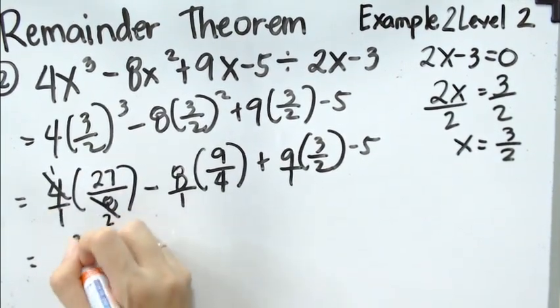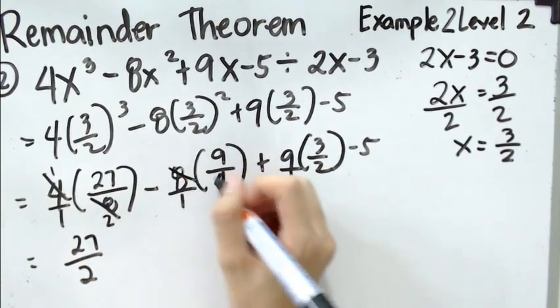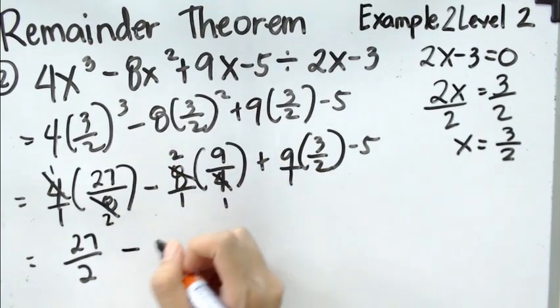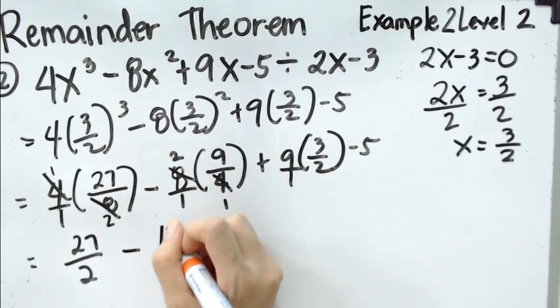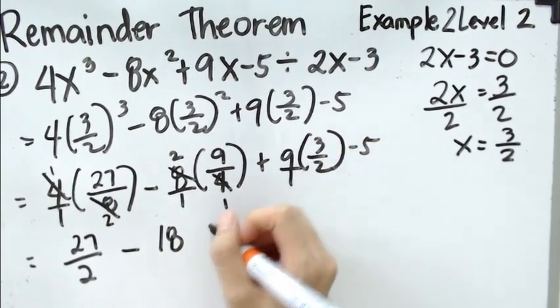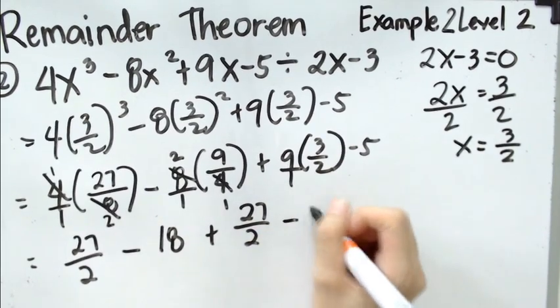1 times 27, it's 27 over 2. And then, we can also use it here. We have here 1 and 2. 8 times 2... 2 times 9 is 18. And then, we have 9 times 3, 27 over 2 minus 5.